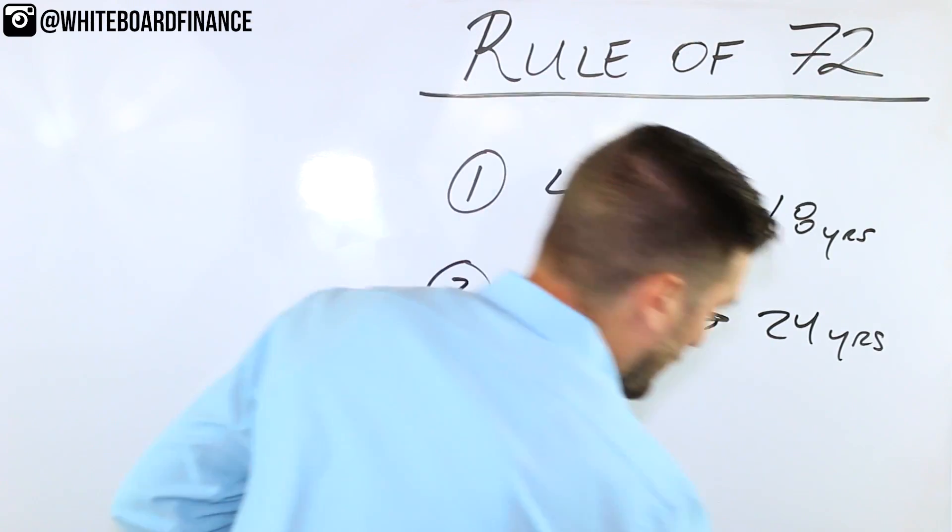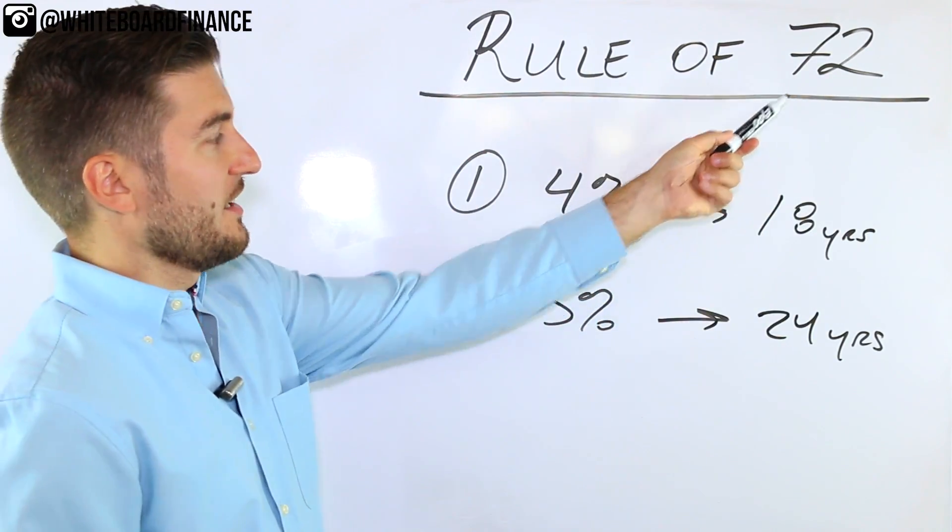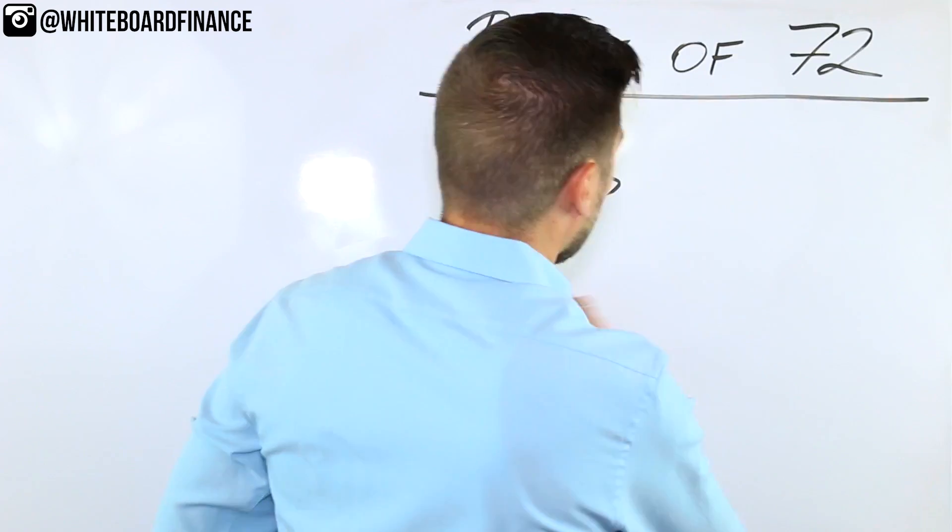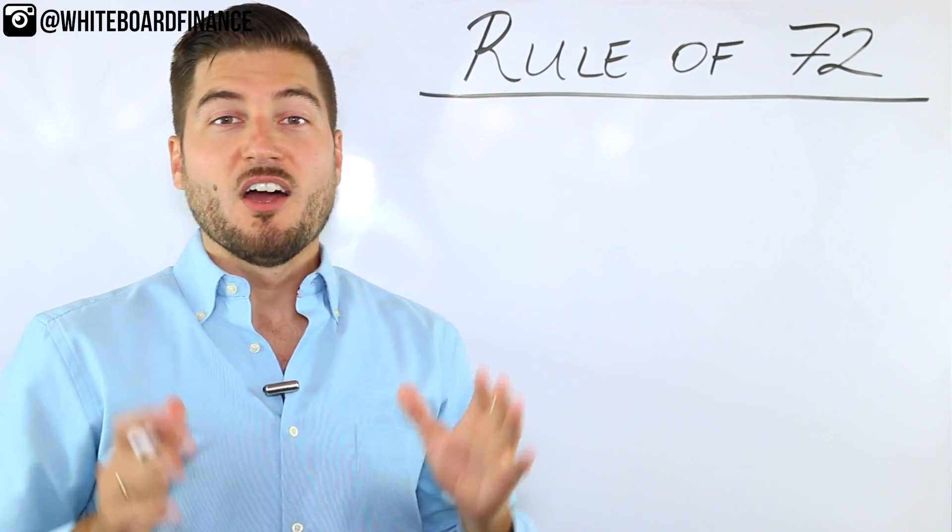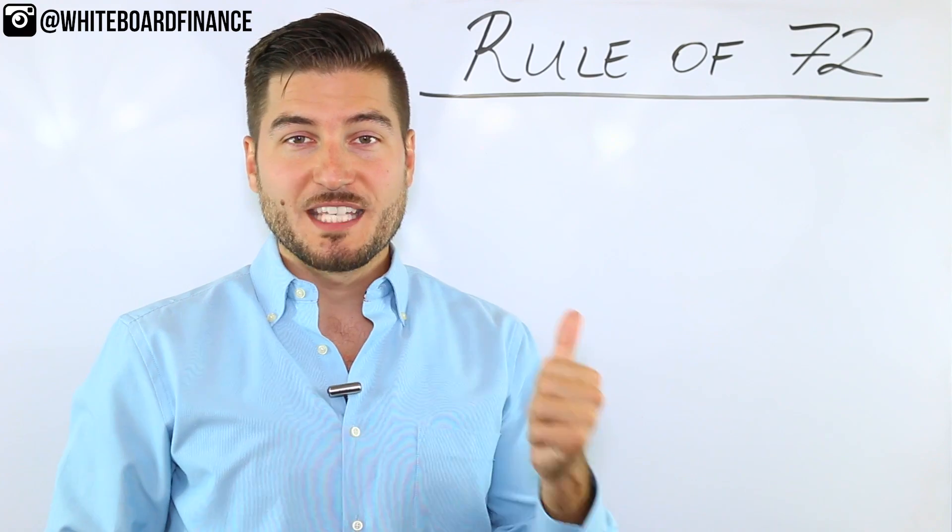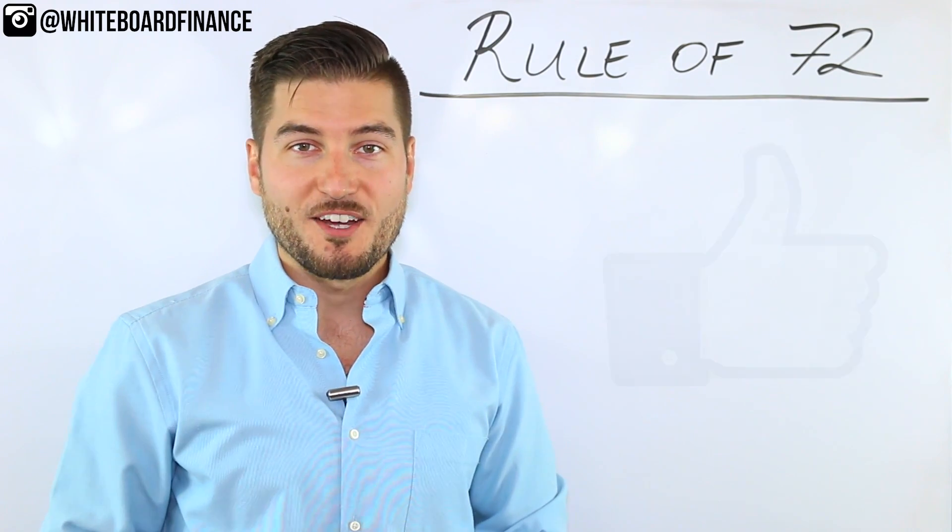So this whole rule, hint, hint, nudge, nudge is called the rule of 72. And I'll show you exactly how the calculations work. If you find interest in this video, give it a thumbs up because there's gonna be a ton of value starting right now.